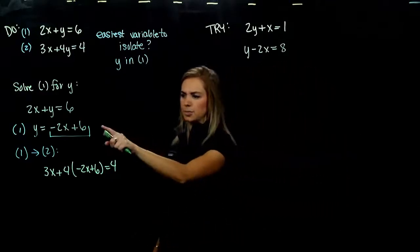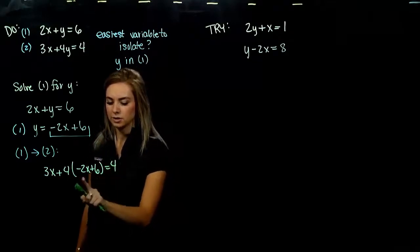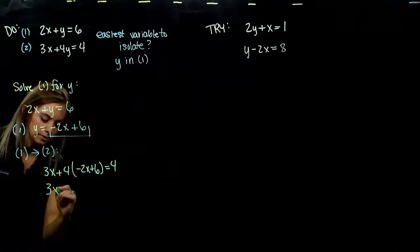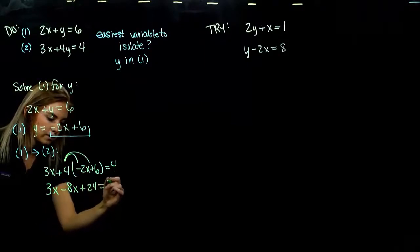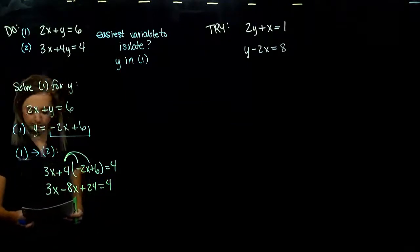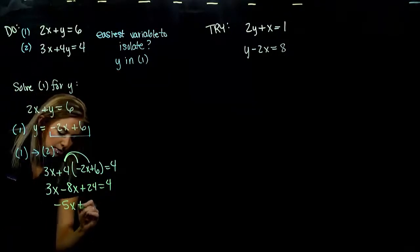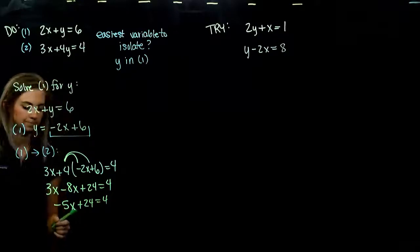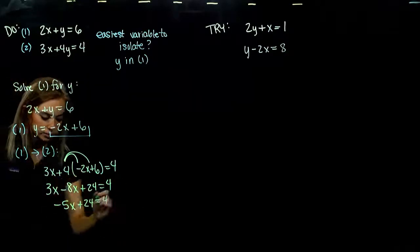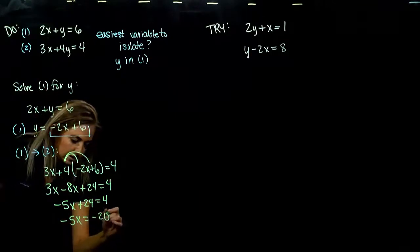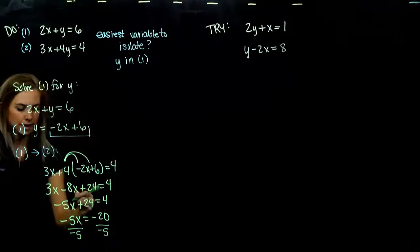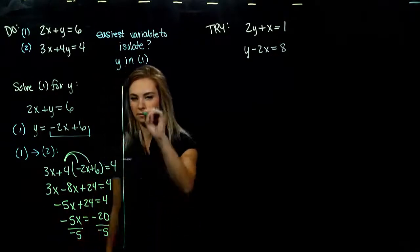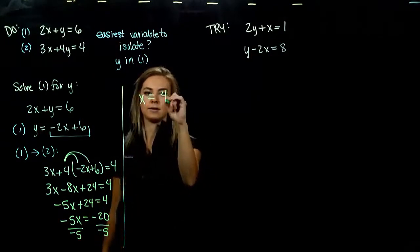We have an equation all in one variable — we just had to do that extra step of isolating first. Getting rid of parentheses by distributing: positive 4 times negative 2x gives negative 8x, and 4 times 6 gives positive 24. Combining like terms: negative 5x plus 24 equals 4. Subtracting 24 from both sides gives negative 5x equals negative 20. Negative divided by negative gives positive, and 20 divided by 5 is 4. So x equals 4.